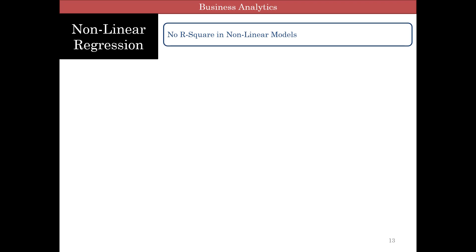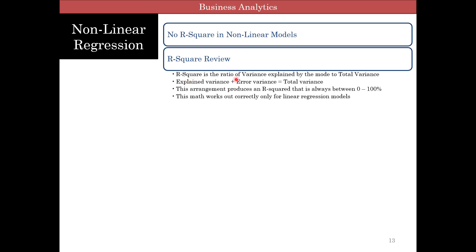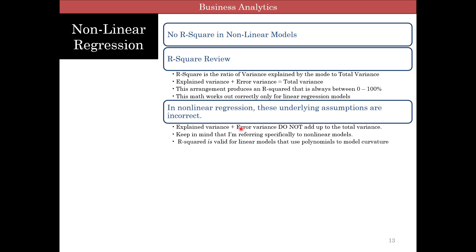When you do true nonlinear models — as compared to linear models with nonlinear variables — there is no R-squared. R-squared is the ratio of explained variance to total variance, and explained variance plus error variance gives total variance. This arrangement ensures R-squared is always between 0 and 100%, and the math works for linear regression. But for nonlinear models, the underlying assumptions are incorrect: explained variance plus error variance does not add up to total variance. R-squared is valid only for linear models that use polynomials for curvature.